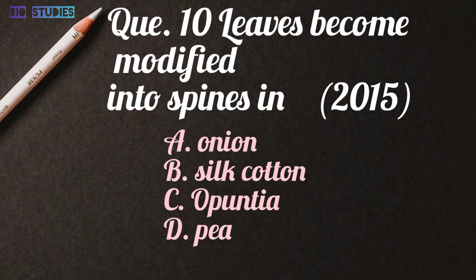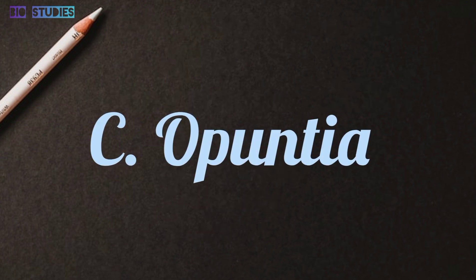Next: leaves become modified into spines in — onions, silk cotton, Opuntia, or pea. And the right answer is C: Opuntia.